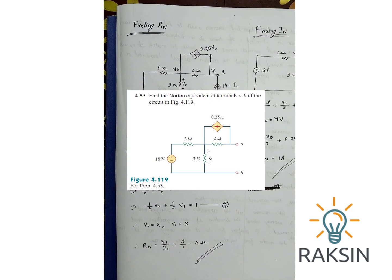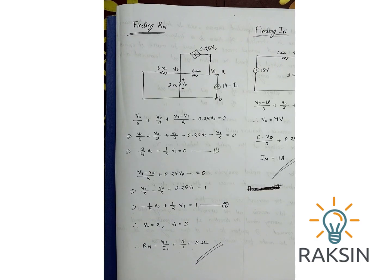In this video we are going to solve problem 4.53 of the Fundamentals of Electric Circuits fourth edition by Alexander and Sadiq. We are asked to find the Norton equivalent circuit at terminal A and B.